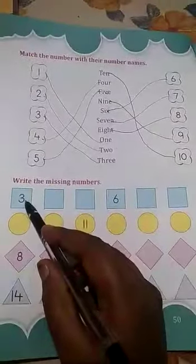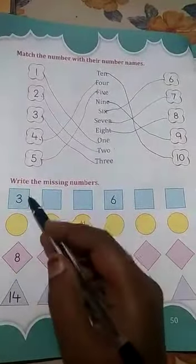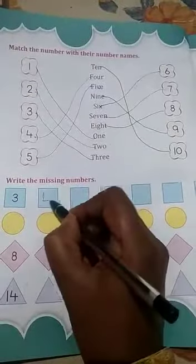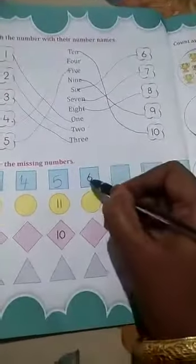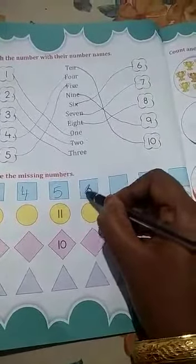This is the missing numbers. 3 after what children? You have to say and write 3, 4, 5, 6. 7, 8, 9.